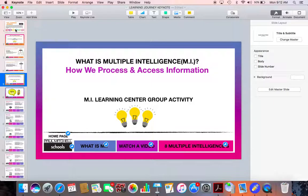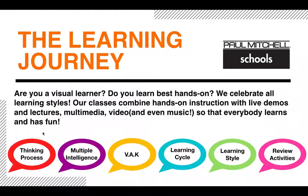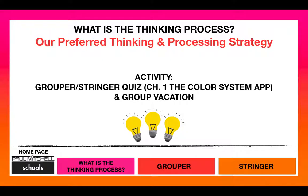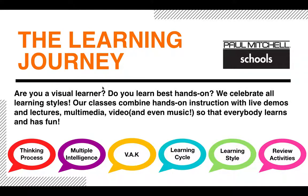Now let's talk about the interactive portion of my keynote. On my homepage, what I've done is created little buttons or little tabs. And what these tabs do is they actually link me to those title slides. So for instance, if I push play and I come down to the thinking process, I can actually click that and it will jump me to the thinking process. From here, I've got little tabs at the bottom of this slide, and I can go ahead and choose to click grouper or stringer and it will jump me quickly to those slides. I can also choose a homepage button and come back to the very beginning.